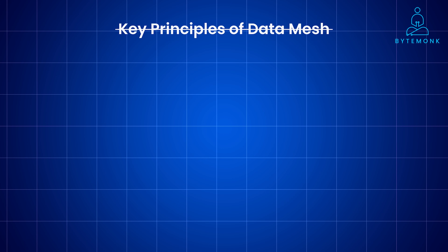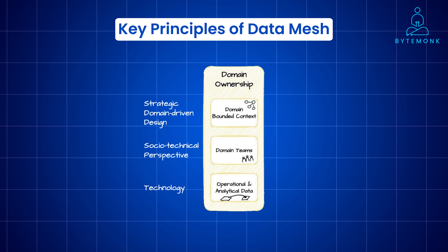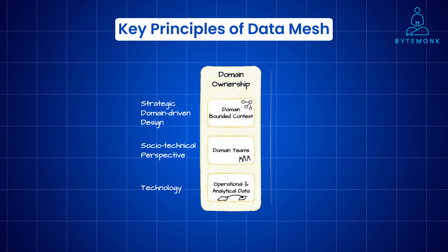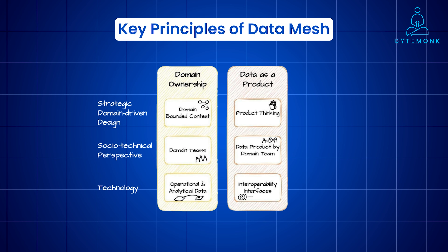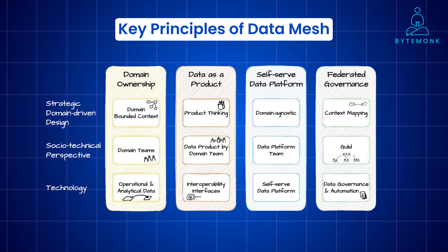Data mesh is built on four key principles: domain-oriented data ownership, data as product, self-service data infrastructure, and federated governance. Instead of a central data team handling everything, each business domain — sales, marketing, or finance — owns its data, meaning the team that understands it best is responsible for its quality and governance. Data is treated as a product with clear ownership, lifecycle, and user-centric design. The platform provides tools for domains to produce and consume data products autonomously, including data storage, processing, and governance tools. Governance is decentralized, with standards and policies applied consistently across domains to ensure interoperability and compliance without central bottlenecks.